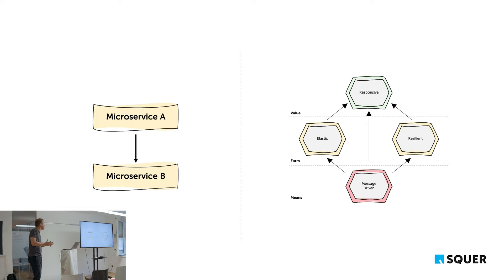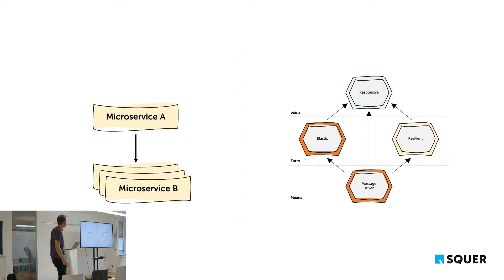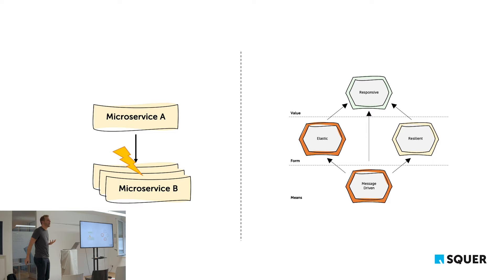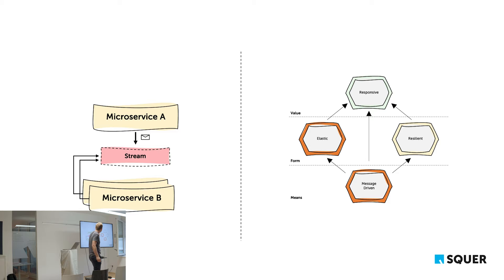Elastic means cloud-native, horizontally scalable. Instead of scaling up by adding memory or CPU, we scale out with multiple instances of a microservice. But then microservice A needs to decide which instance to talk to. With a message-driven approach, we solve this by putting a stream in between — microservice A sends messages to the stream and whoever is available consumes them. This easily supports being much more elastic.